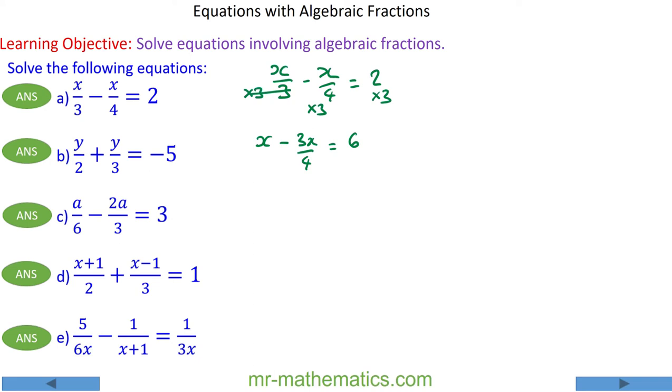Now I need to get rid of the division of 4 by multiplying everything by 4, so I'm left with 4x minus 3x because these will cancel will equal 24. And 4x minus 3x is 1x, so x will equal 24.